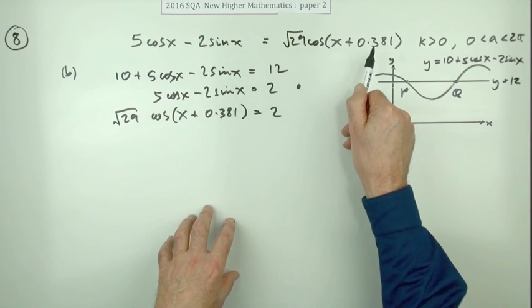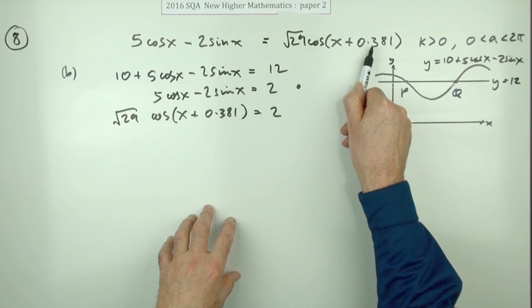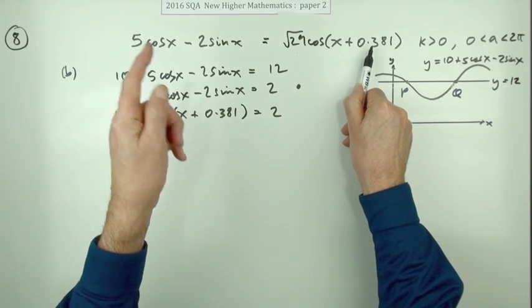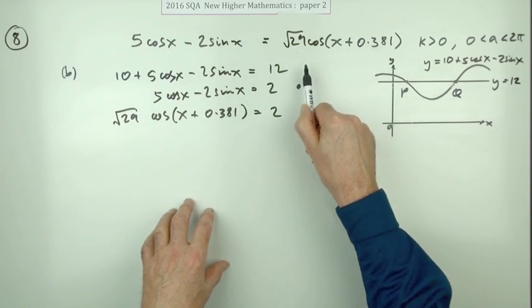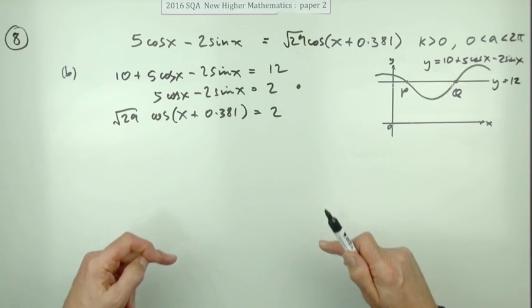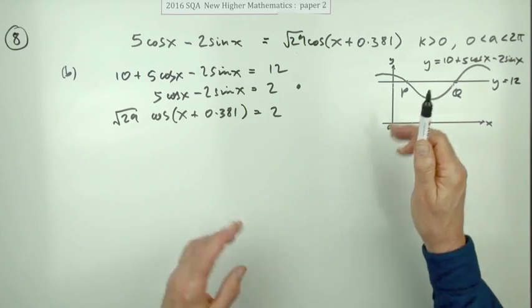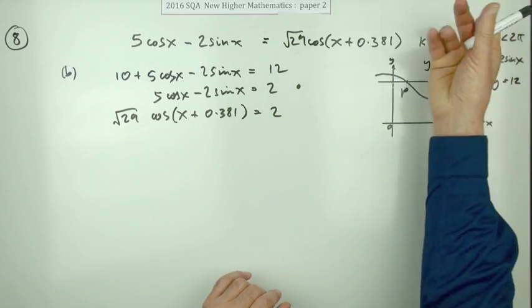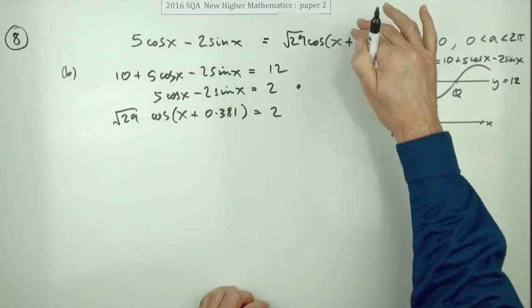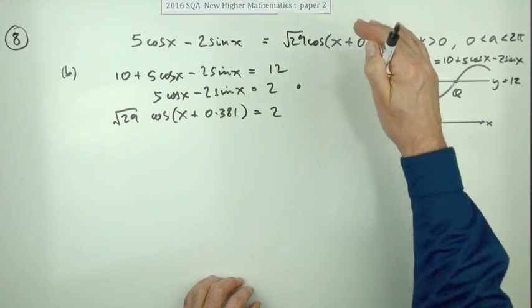But if you had your angle in degrees in part a as a final answer (not as part of the working), just left it as an angle in degrees, and then worked through this and decided this time to change it to radians, then you'd lose marks again here. If it's in radians, just stick to radians. Yes, you can use degrees for a translation and back again, but make sure your final answer is what they want: a answering in radians, b answering in radians.